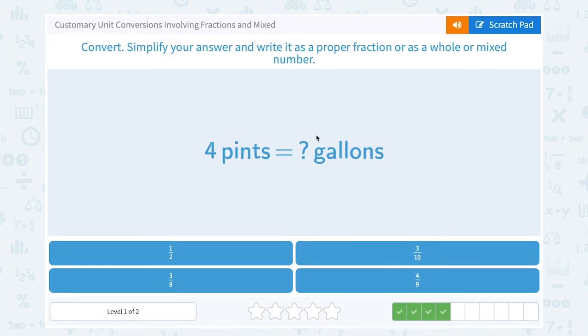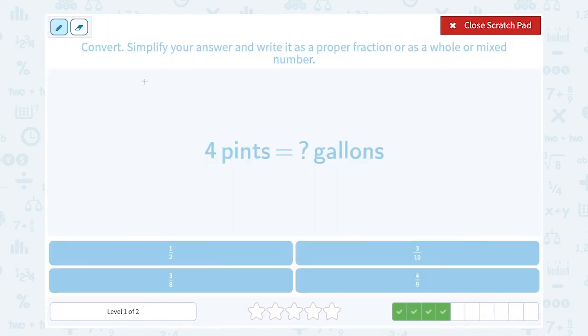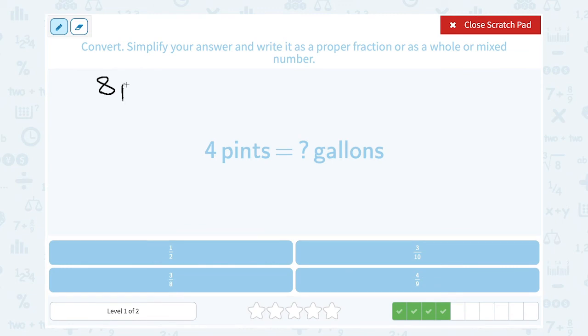They told us that 4 pints is equal to blank gallons. We need to know that there are 8 pints in 1 gallon. That is our conversion factor. Eight pints is equal to one gallon.